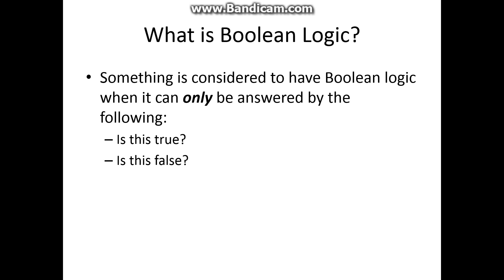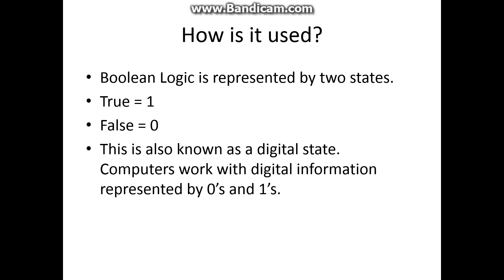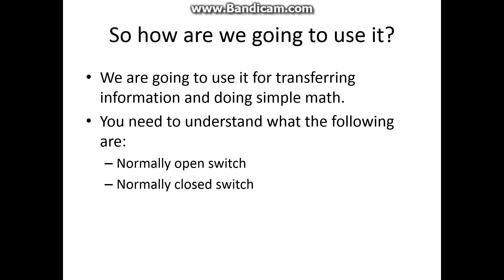So what is Boolean logic? Boolean logic is something that can only be answered by two questions: is this true, or is this false? Boolean logic is represented by two states — if it's true, it's a one, and if it's false, it's a zero. This is also known as a digital state. Computers work with digital information represented by zeros and ones. So how are we going to use it? We're going to use it for transferring some information and doing simple math.